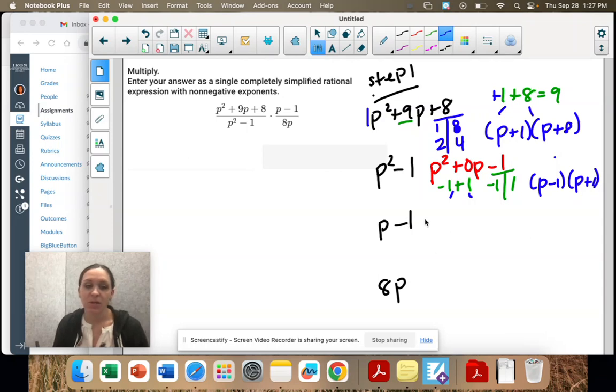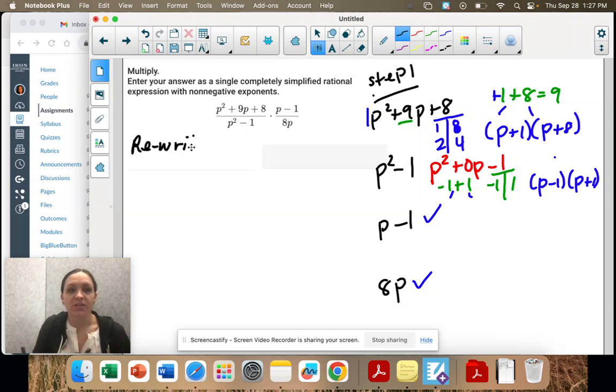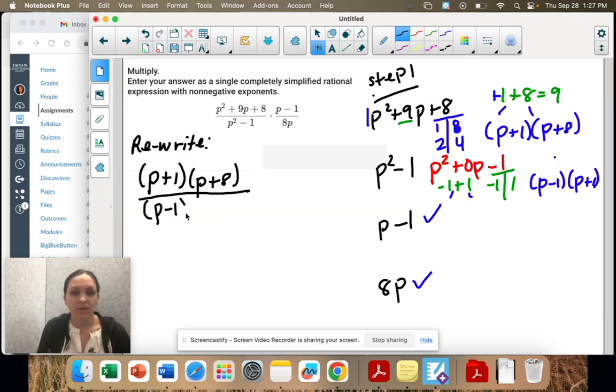p minus 1, we can't factor. There's nothing to take out. And 8p doesn't have the plus or minus, so we can't factor that either. So right now we're going to rewrite this with our factors. So we have p plus 1, p plus 8, divided by p minus 1, p plus 1, times, and then these two we didn't factor at all, they just stay the same.